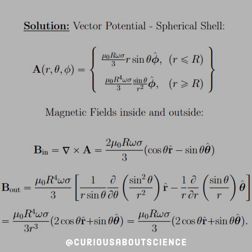Taking the curl of that, we get this magnetic field on the inside is equal to 2μ₀Rωσ over 3. Remember, we're dealing with different coordinate systems here. Spherical coordinates gives us a cosine θ r̂ minus a sine θ θ̂.